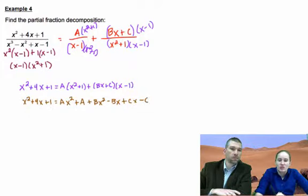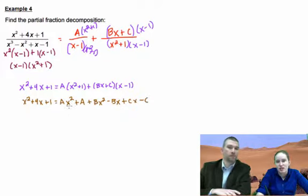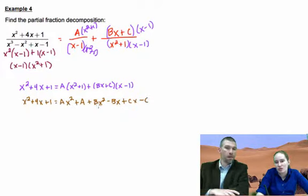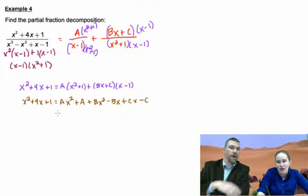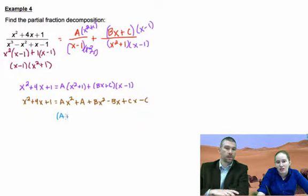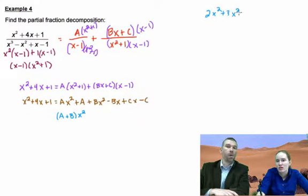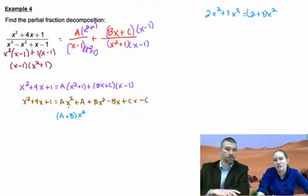So what we're going to do is we're going to group these together by what would be like terms. If these were actual numbers, x squared and x squared would add together. And so what happens is that together those would make A plus B times x squared. Think about it - if this was 2x squared plus 3x squared, that gives you 5x squared, which is 2 plus 3 times x squared. So that's what we're doing - we're going to put the x squared together, add our like terms.